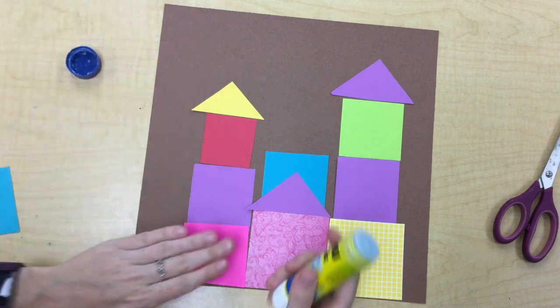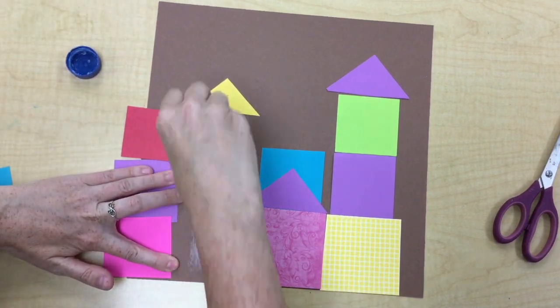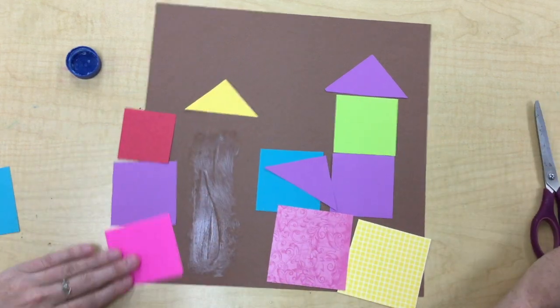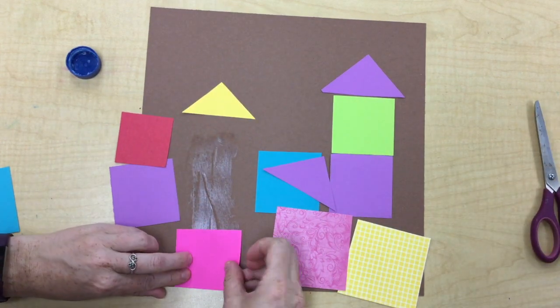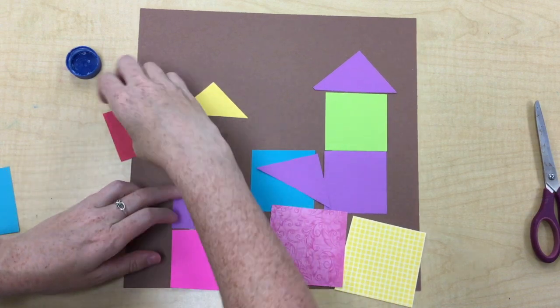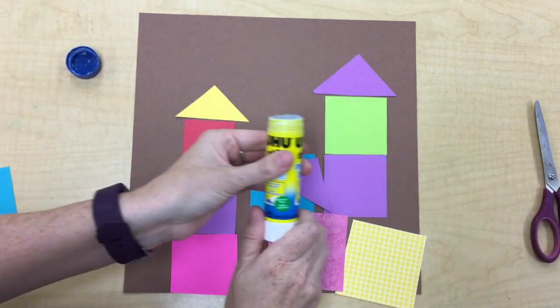When you're ready to glue the shapes down, just slide over your tower one at a time and then rub that glue stick all over it. You've got to work fast because you don't want that glue to dry. So do one tower at a time and then just put more glue down as you need it.